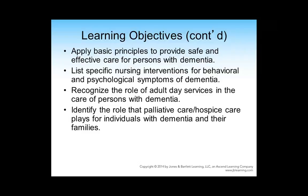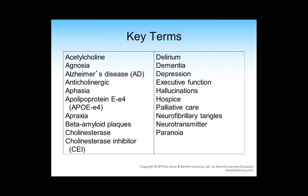We really want to look at nursing interventions because it's about symptoms — they've even changed the terminology; we're no longer calling it behavioral, it's the symptoms of dementia. We'll also look at adult day services and when palliative and hospice care can assist family members caring for a person with dementia at home and in facilities. There are a lot of key terms relating to the brain, proteins, plaques, and drugs that we'll discuss throughout this lecture.